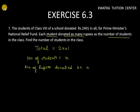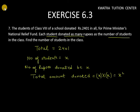As many students there are, that many rupees each student has donated. So the total amount donated will be x into x — that is, number of students multiplied by number of rupees donated by each student.